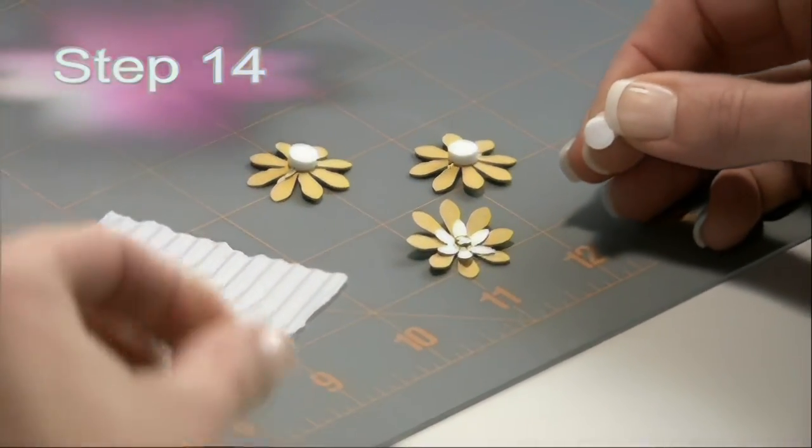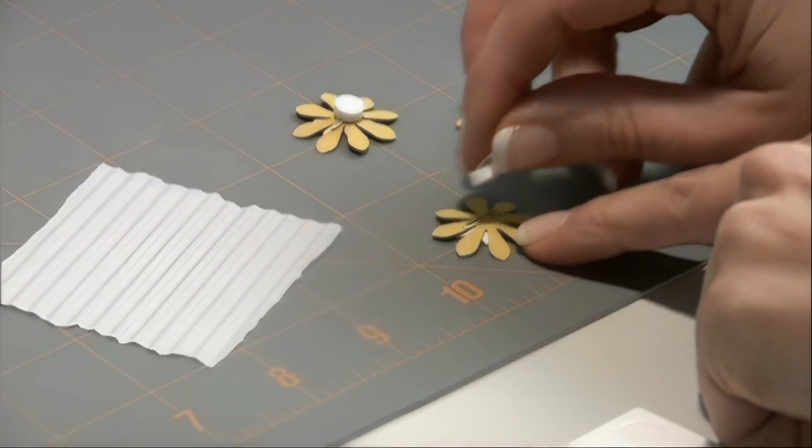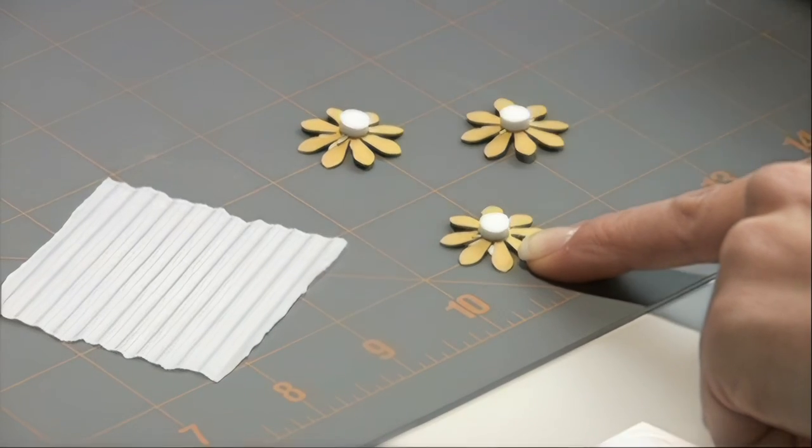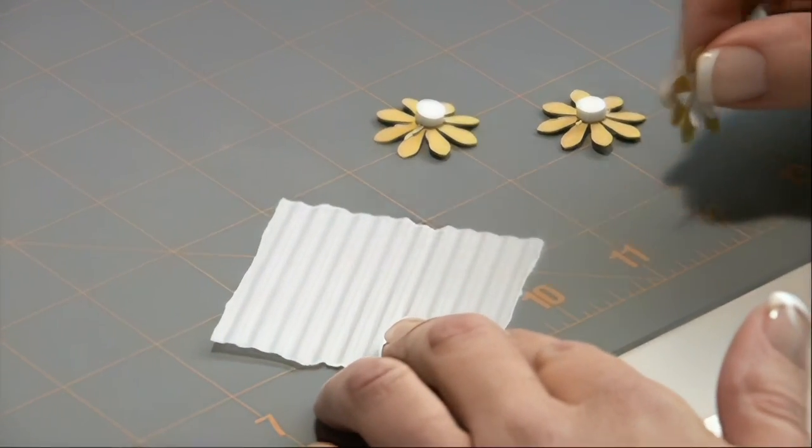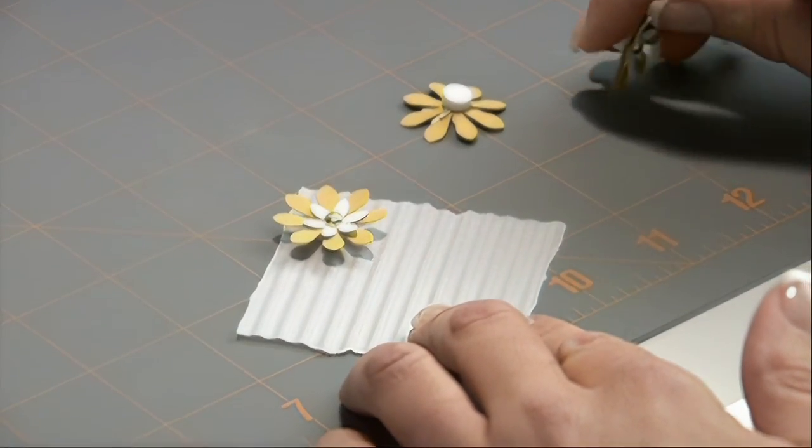Once you've completed all three daisies it's time to put some small pop dots on the back of each one. The pop dots will give it dimension as well as adhere each daisy to your vellum. Apply the daisies to the vellum in a triangle formation.